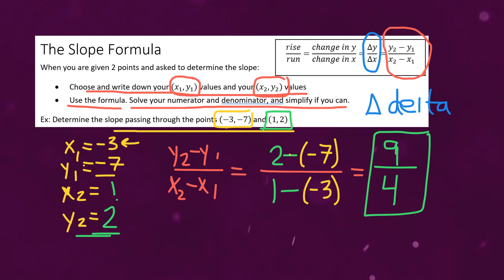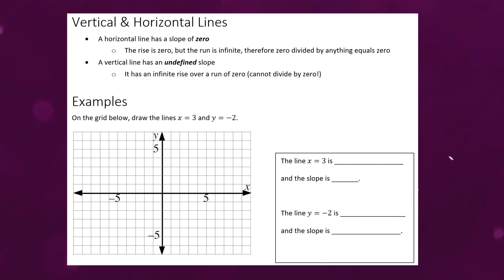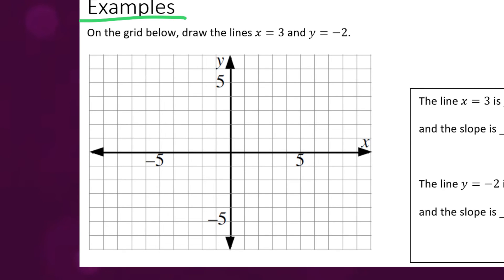Now the one last thing we're going to cover in this video is vertical and horizontal lines because they're a little unique. And I'm actually going to start by moving straight down to the examples here. It says on the grid below draw the lines x equals three and y equals negative two. Let's think about what would happen in that case. First let's do x equals three. So that means we're going to go along the x-axis and look for where it's equal to three and that would be right here.